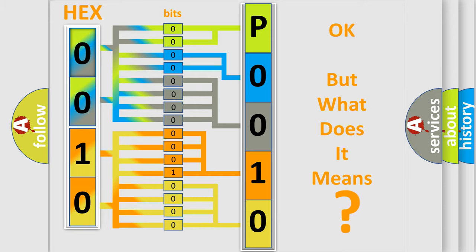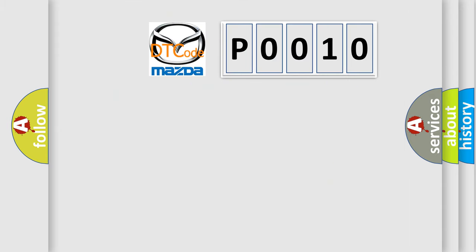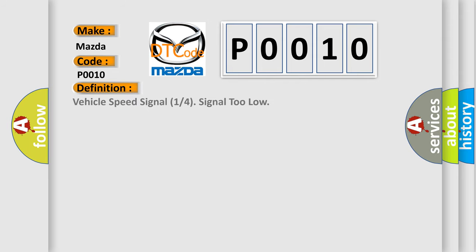The number itself does not make sense to us if we cannot assign information about what it actually expresses. So, what does the diagnostic trouble code P0010 interpret specifically for Mazda car manufacturers? The basic definition is Vehicle speed signal 1 or 4 signal 2 low. And now this is a short description of this DTC code.